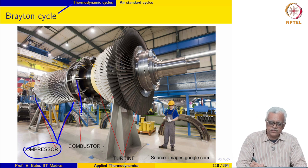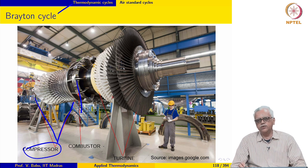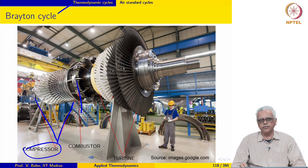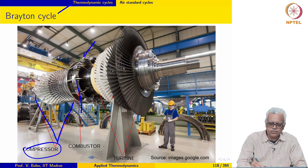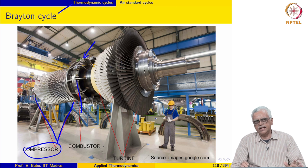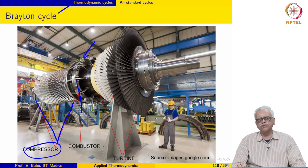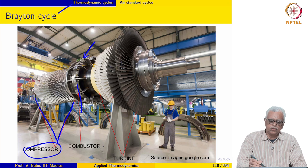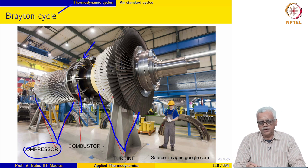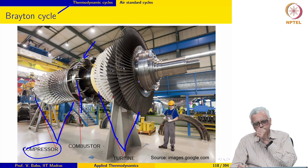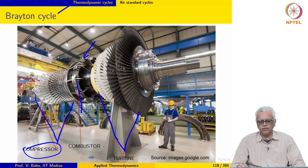The air then goes into a combustor, where fuel is sprayed into the air stream and the mixture of fuel and air undergoes combustion. Peak temperatures are usually seen in this part of the cycle, and they can be of the order of about 1300 to 1400 degrees Celsius, probably around 1350 degrees Celsius or so. The air then expands in the turbine, which has many rows of turbine blades.